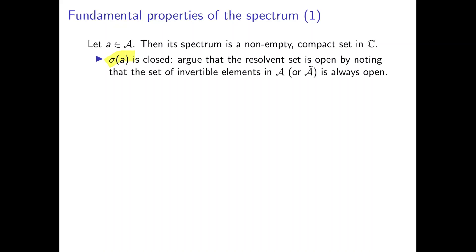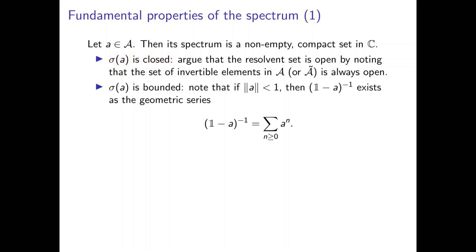First off, we prove that the spectrum is closed by arguing that the resolvent set is an open set. We do this by noting that the set of invertible elements in an algebra is always going to be open. Likewise, if we want to prove that the spectrum is a bounded set, it's actually quite easy. We just have to note that if we have an element A with norm less than 1, then this inverse exists as a geometric series. This geometric series is very central to this kind of theory, and it's worth memorizing this exact expression because it comes up all the time in spectral theory.